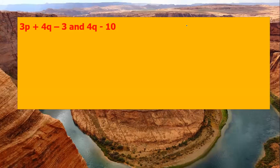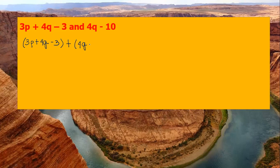For example, 3p plus 4q minus 3 and 4q minus 10. So write 3p plus 4q minus 3, open and close parenthesis, then plus 4q minus 10. Then copy, 3p plus 4q minus 3.